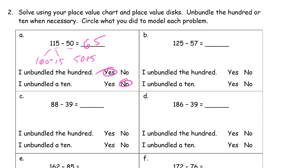Now I'll draw the HTO chart for 125 minus 57. We have H, T, O: 125 is one 100, two tens, and five ones. I'm going to cross out 57. Always start with the ones digits — I need to cross out 7 ones, but I only have 5, so I have to unbundle a 10, making 10 more ones.